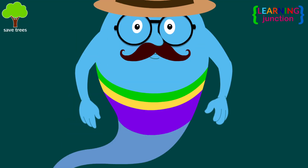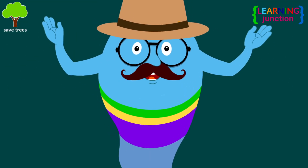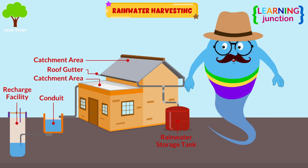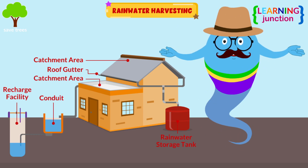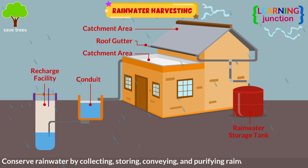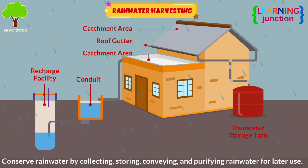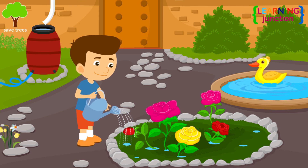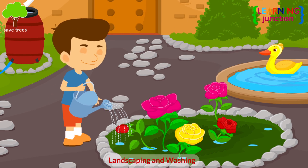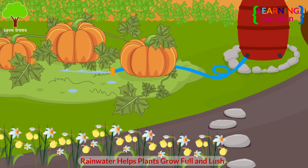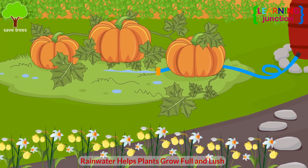People collect and use rainwater for various purposes. Rainwater harvesting is the process used to conserve rainwater by collecting, storing, conveying, and purifying rainwater for later use. You can use rainwater for other purposes like landscaping and washing — using rainwater is the best option to care for your green friends.